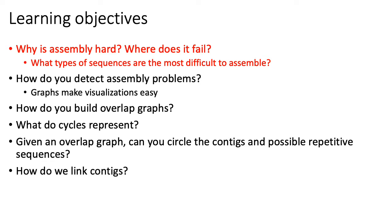The main kind of graph we'll talk about is what's called an overlap graph. The reason why these overlap graphs are important is because cycles in these overlap graphs basically tell you something about repetitive sequences, which are a certain type of sequence that confound assemblers the most.